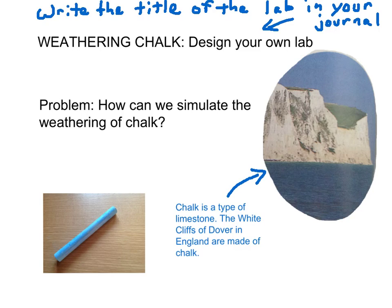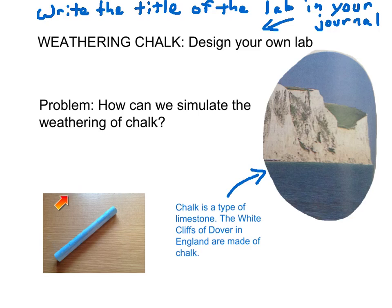The title of the lab is Weathering Chalk. The problem we're looking at is how can we simulate the weathering of chalk. In geology, chalk is a kind of limestone — anyone familiar with the white cliffs of Dover in the south of England knows these are made of chalk. Chemically, chalk is quite similar to the chalk we used to write on blackboards, so we're going to use blackboard chalk to simulate the weathering of rock chalk.